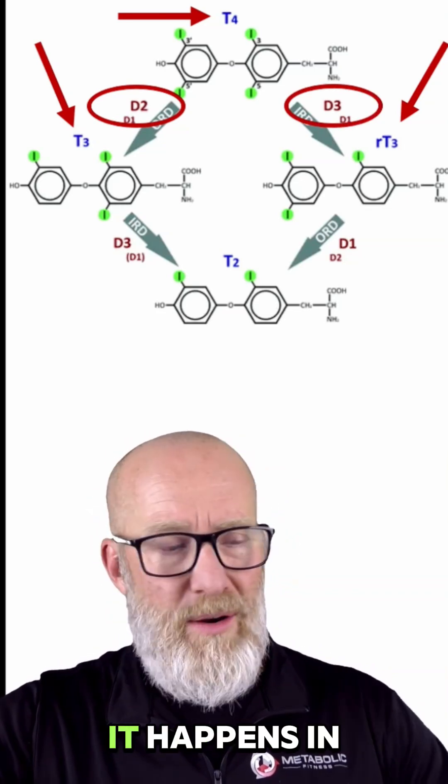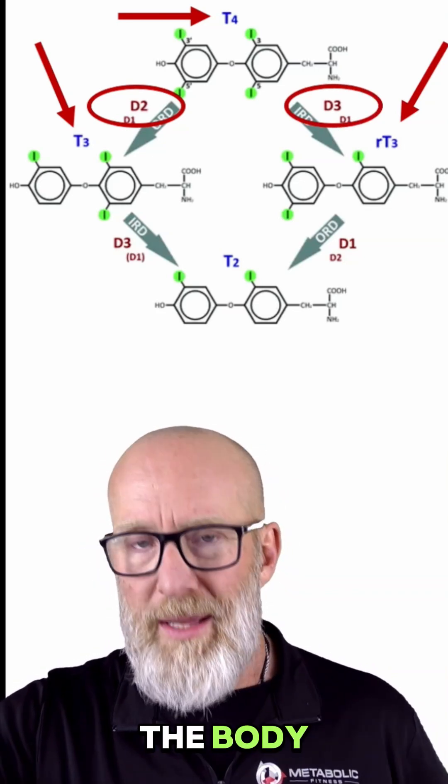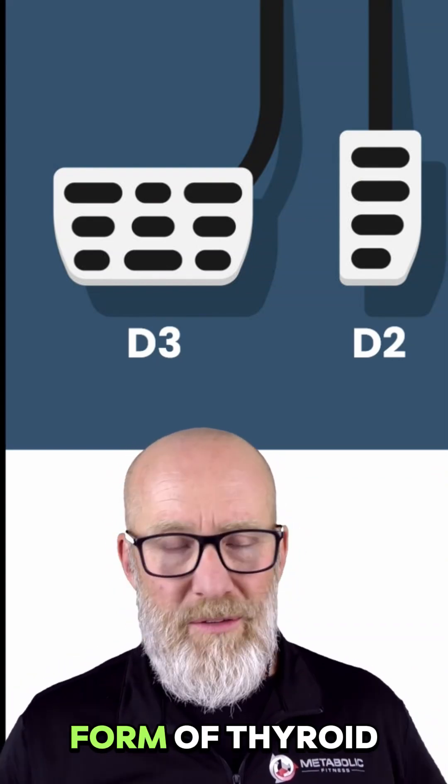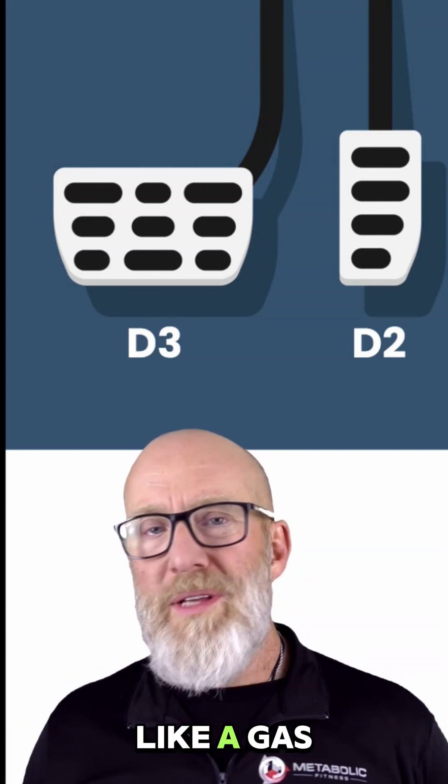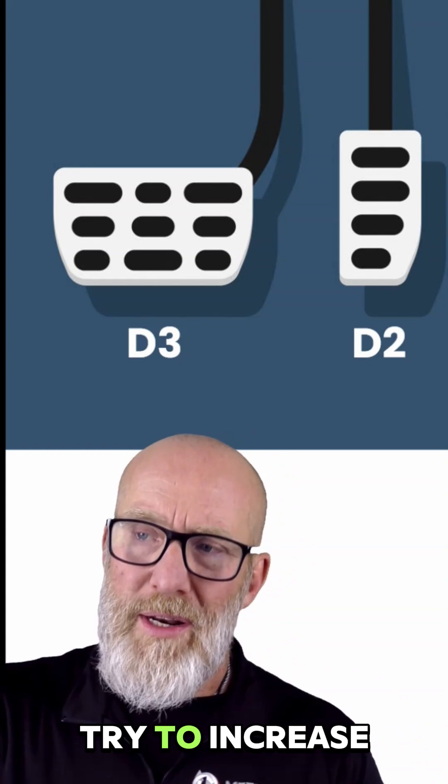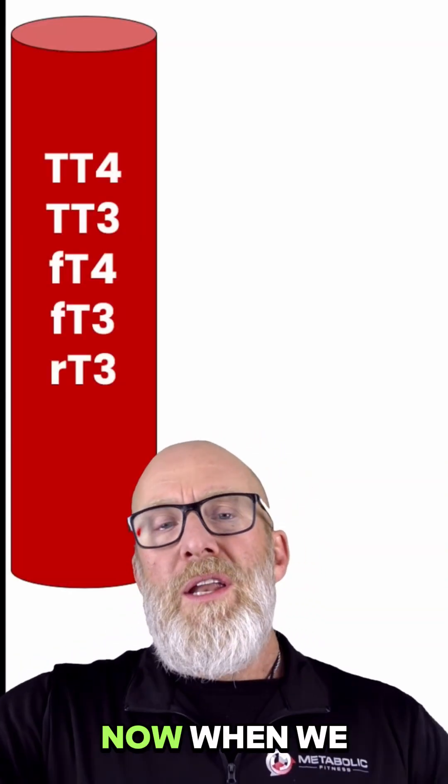Now again, this is very watered down. It happens in a number of different tissues around the body. But for simplicity's sake, D3 is like the brake. It makes more reverse T3, which is an inactive form of thyroid hormone. And D2 is like a gas pedal, so it's going to crank up the T4 to T3 conversion and try to increase metabolism.